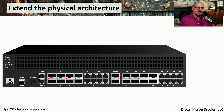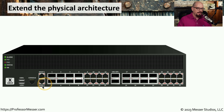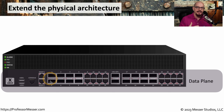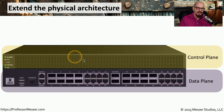One way to better understand the data plane versus the control plane is to see how this might be implemented on a physical device. Here we have a physical switch, and we want to break out the different planes of operation. At the bottom of the switch are all the interfaces used to move data — all traffic forwarding happens on the data plane. This device also needs configurations such as network address settings or changes to how data might be trunked, and all of those changes take place in the control plane.